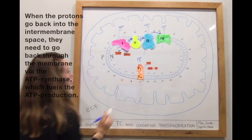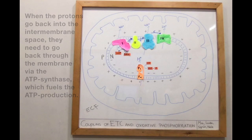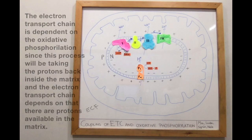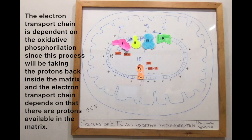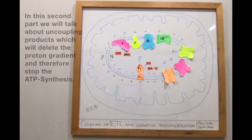When the protons go back into the matrix they need to pass through the membrane via the ATP synthase, which fuels ATP production. This way the ATP production is completely dependent on the respiratory chain and the electron transport, because without it there would be no proton gradient. The electron transport chain is also dependent on oxidative phosphorylation, since this process takes protons back into the matrix, and the electron transport chain depends on protons being available there.